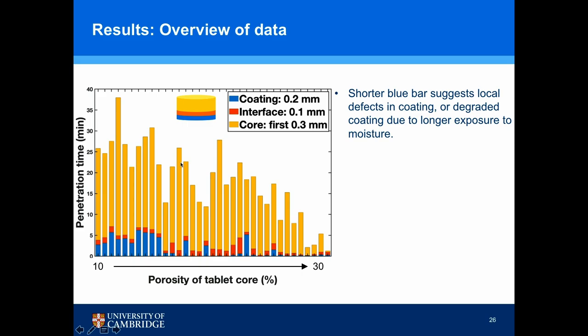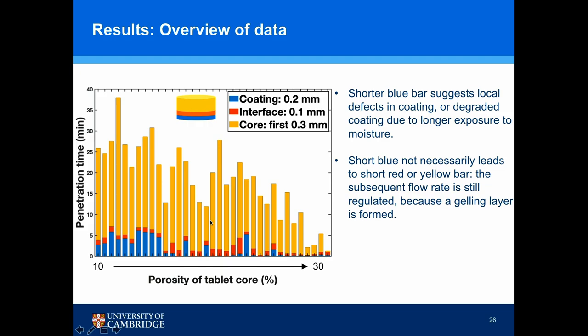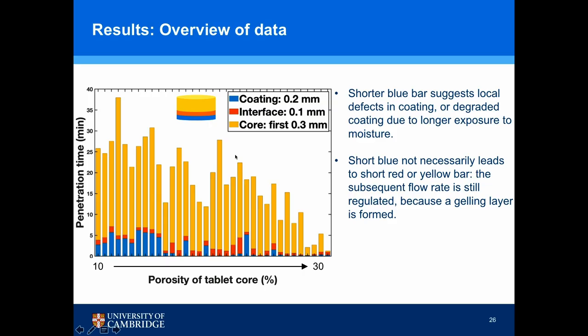Looking closely, some tablets have a really short blue bar, implying defects in the coating or degradation due to moisture. However, interestingly, a shorter blue bar does not necessarily lead to a shorter red or yellow bar. This could be explained by the formation of a gelling layer from the coating despite any defects — the gelling layer regulates subsequent flow, so subsequent flow is not strongly correlated to the penetration rate through the coating. Overall, there is a negative correlation between penetration time and porosity.